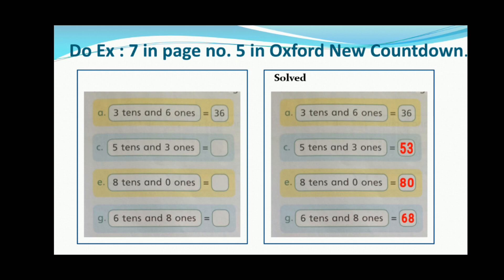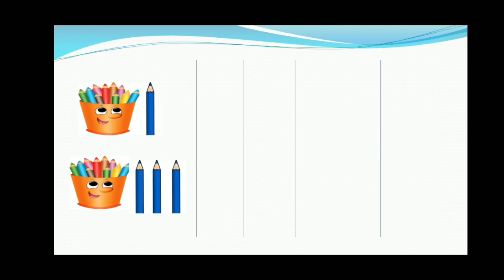5 tens and 3 ones — the place value will be equal to 53. The place value of 5 tens is 50 and 3 ones is 3, so 50 plus 3 equals 53. Now do all the parts with the same instructions.